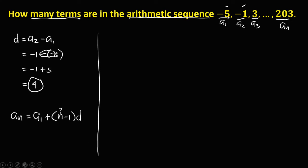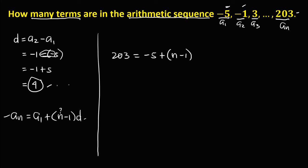To solve now for the number of terms, using this formula: a sub n, that's 203, equals a sub 1, that's negative 5, plus the quantity of n — this one is the unknown — minus 1, times the common difference, that's 4.